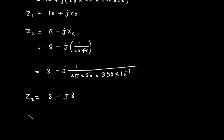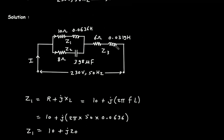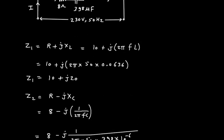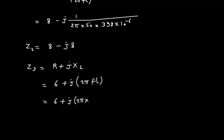Then Z3 is the combination of R and L, so Z3 = R + jXL. The formula for XL is 2πFL, and the value of R is 6 ohm. So Z3 = 6 + j·(2π × 50 × L).